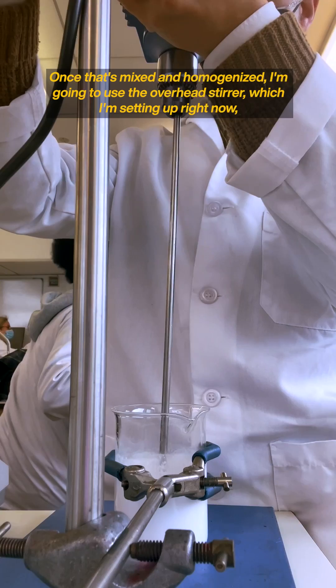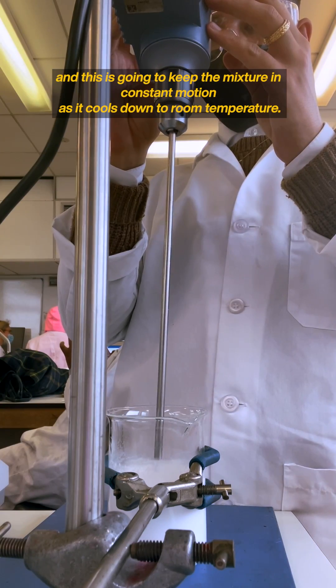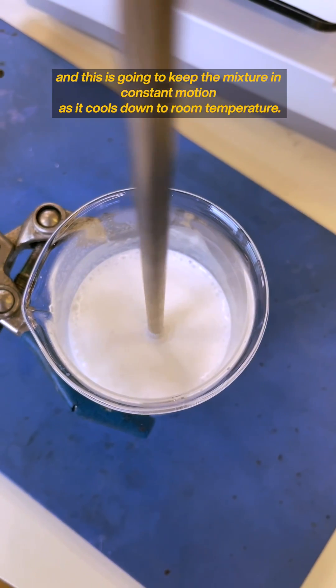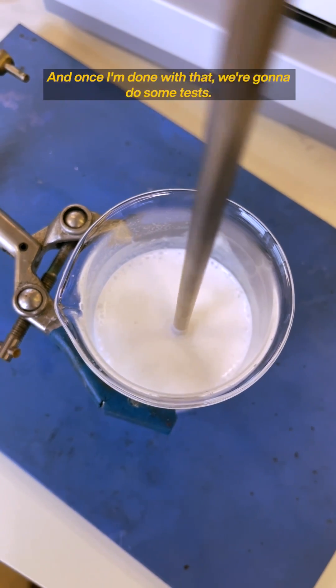Once that's mixed and homogenized, I'm going to use the overhead stirrer which I'm setting up right now. This is going to keep the mixture in constant motion as it cools down to room temperature.